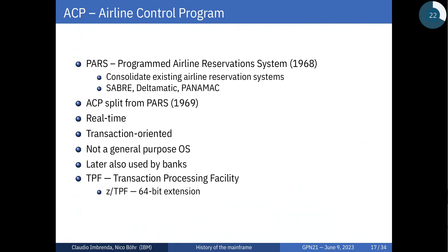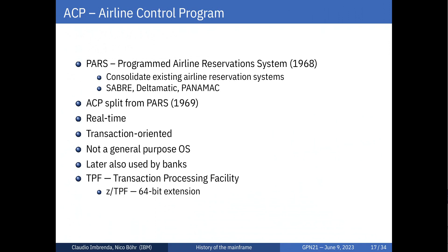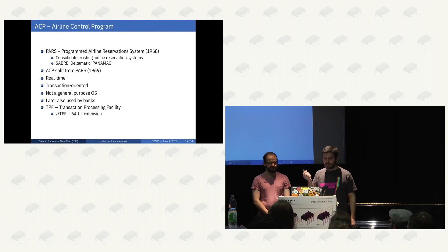Another interesting thing is the Airline Control Program: real-time, transaction-oriented, not a general-purpose OS — you can't even compile a program on it, you need to cross-compile for it. Airlines used it for reservations, then banks realized you could do transactions in real-time. So banks started using it, and IBM said maybe you shouldn't call it the Airline Control Program anymore — it's more like a Transaction Processing Facility. And it's still there: it's called ZTPF and works on 64-bit architectures.